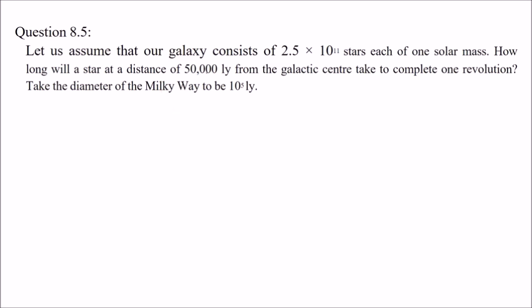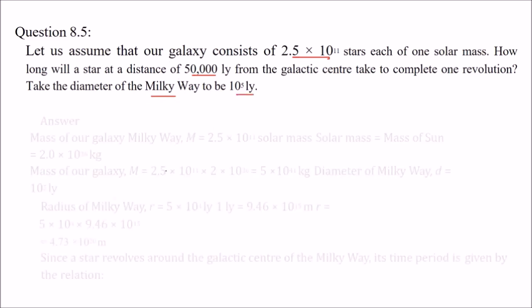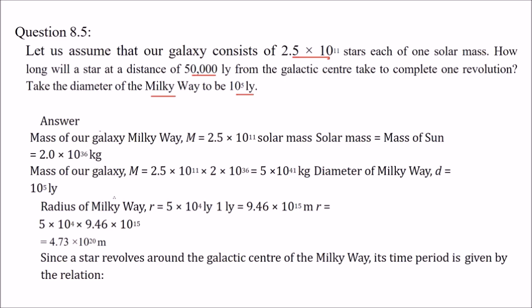Ajiye maan lijiye ki yeh hamari jo galaxy hai, usmein itne stars hain. Har ek ka assume kar lijiye ki ek solar mass hai. How long will a star at a given distance from the galactic center take to complete one revolution? Doori batayi gayi hai, aur aapko diameter jo Milky Way ka lena hai woh takreeban itna lena hai light years. Toh mass jo apni galaxy Milky Way galaxy ki hai — woh yahaan par diya hua hai — usko hum directly le lenge.